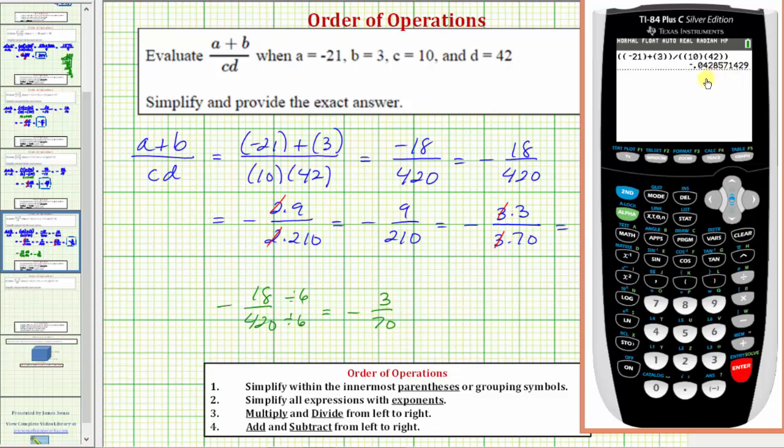Pressing enter, notice how we get a rounded decimal value. We want an exact value as a fraction though. To convert the decimal to a fraction, we press math, enter, enter. And notice how our answer is correct, negative three over seventy.